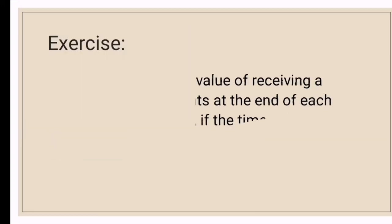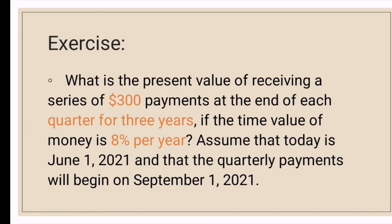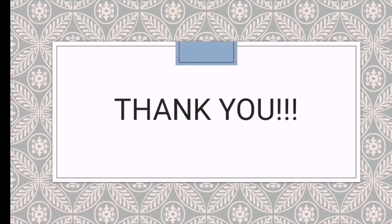Here is an exercise for you to assess your understanding: what is the present value of receiving a series of $300 payments at the end of each quarter for 3 years if the time value of money is 8% per year? Assume that today is June 1, 2021, and that the quarterly payments will begin on September 1, 2021. Feel free to comment your answers in the comment section below. That ends our tutorial video for today — I hope you enjoyed and learned something.